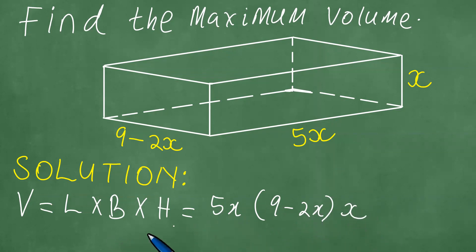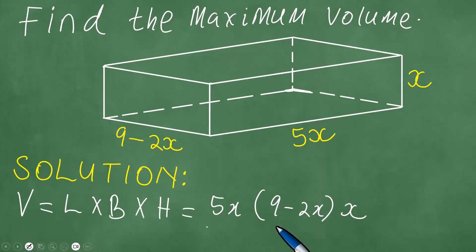The meaning of this is that the volume equals 5x times (9 minus 2x) times x, as we can see here.